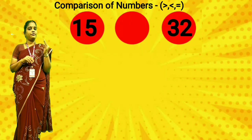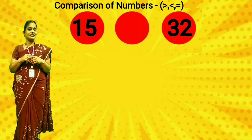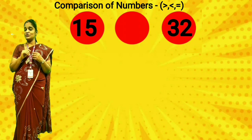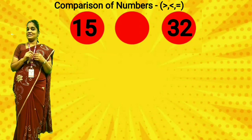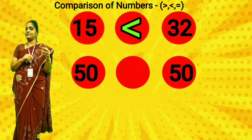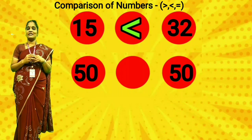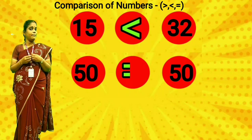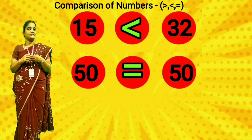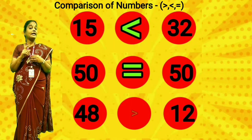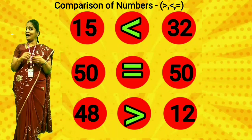See here: fifteen is here, thirty-two is here. Now compare these two numbers. Which is the bigger number? Thirty-two. Crocodile will open the mouth toward the bigger number. Now what symbol will come? Lesser than symbol. Next one: fifty is here and fifty is here. Both the sides are equal. Now what symbol will come? Equal to symbol. Next: forty-eight is here, twelve is here. What symbol will come? Greater than symbol.